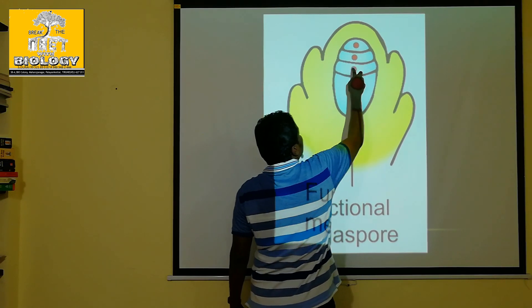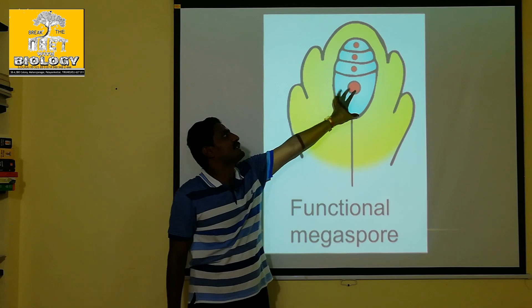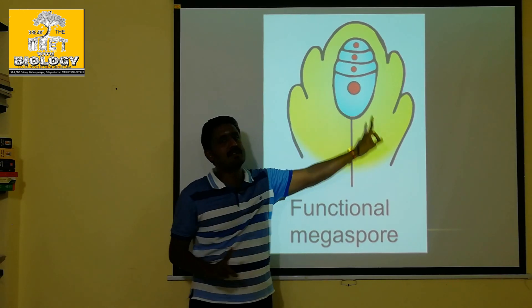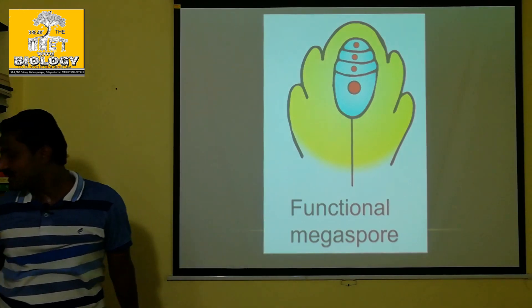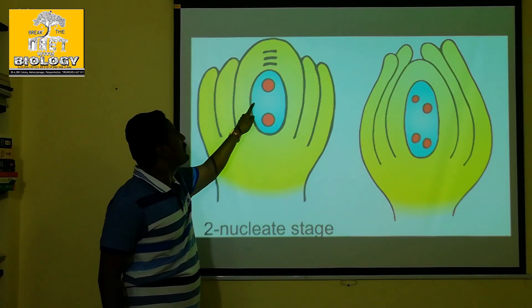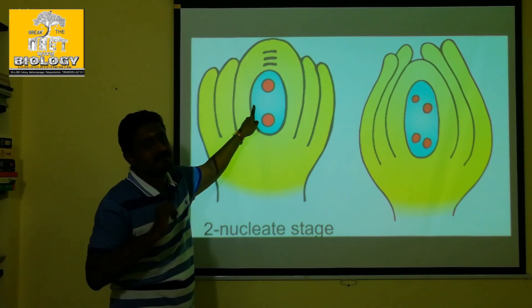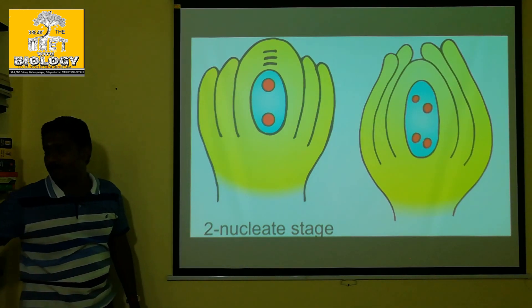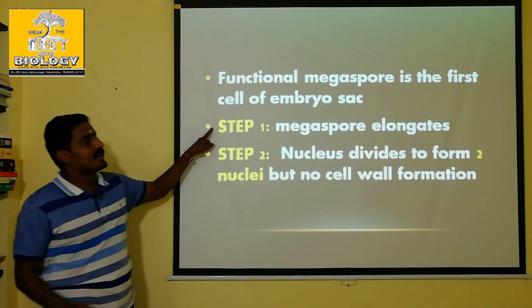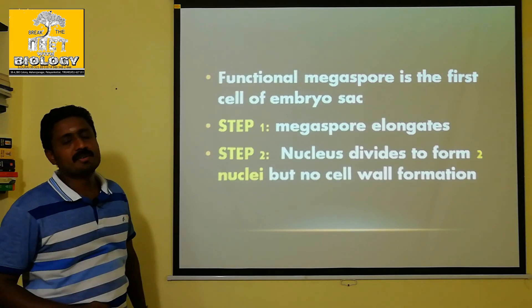This cell will elongate. In this cell there is only one nucleus. Now, how does it divide? Two nuclei are formed. This is the second step — the megaspore is elongated and two nuclei are formed.